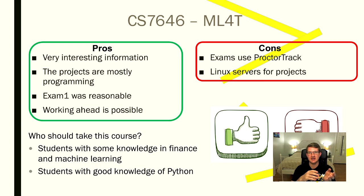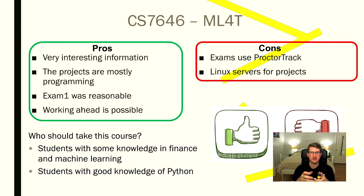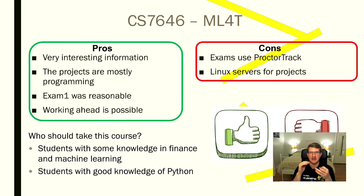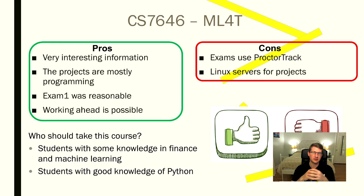On the con side: the exams do use ProctorTrack, though it's only the shell, which makes it not as bad as taking the test fully within the ProctorTrack software. Also, when doing projects you have to submit them for testing on a Linux server, which takes a little time to figure out. The first one to two weeks of any OMS CS course generally take more time because you need to get used to things like testing code on a Georgia Tech server or submitting through their portal. This class uses a Georgia Tech Buffett server, which adds a couple hours of research upfront, but once you get a hold of it it's really not so bad — as long as you have some Linux knowledge, and the people on Piazza are very eager to help.